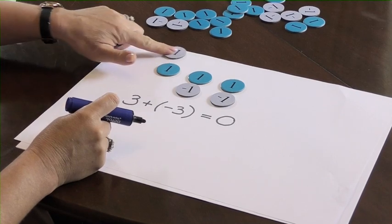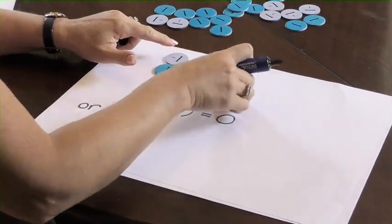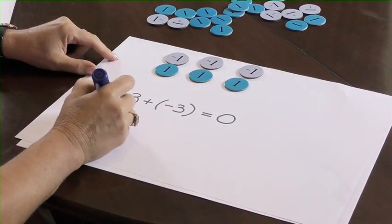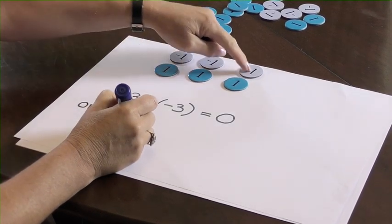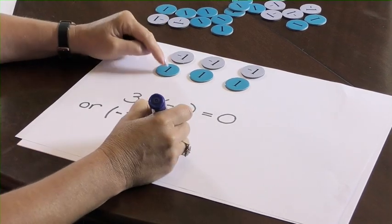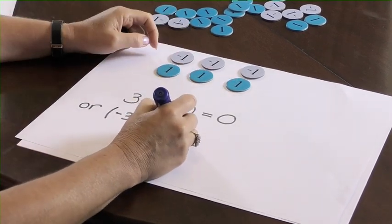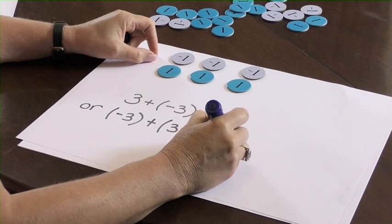We could think of negative three, one, two, three, plus three equals zero.